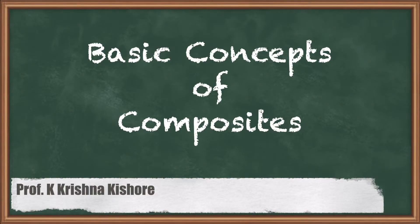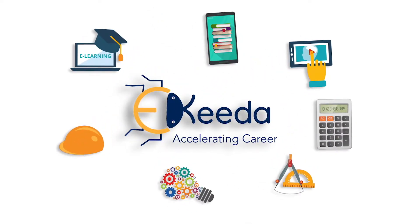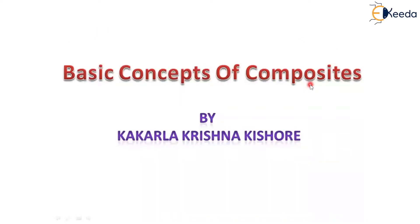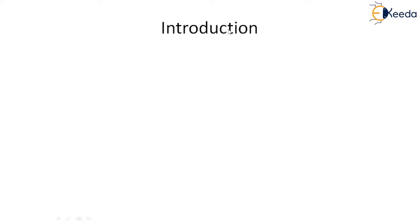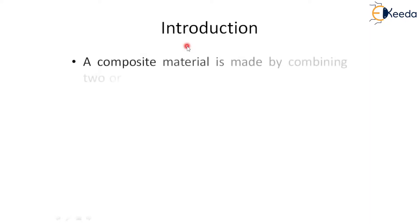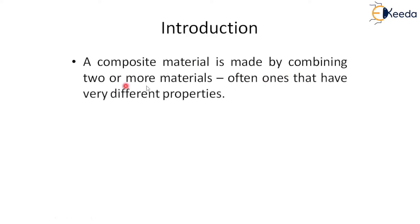Today in this session we will discuss the basic concepts of composite materials which are utilized by industries and manufacturers. Without composite materials we cannot see the world as we know it. Composite material means it is made by combining two or more materials, often ones that have very different properties. This is the definition.